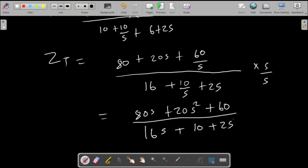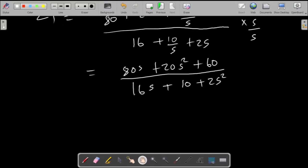Now we just have to simplify this because this is our transfer function. We said that Z_T would be equal to the ratio of V_O divided by I_I. So we now have a transfer function, we now have to simplify it.